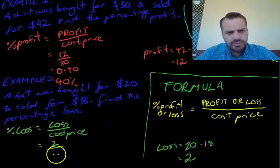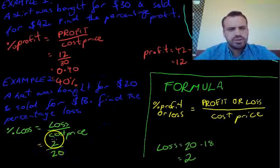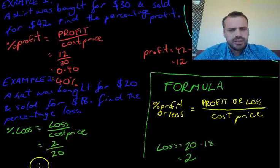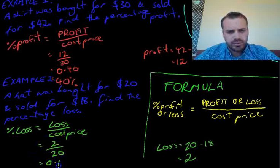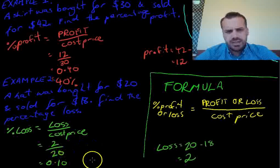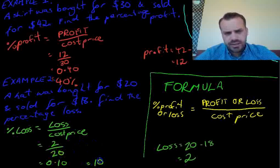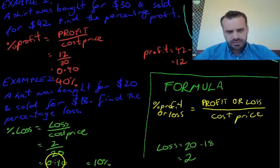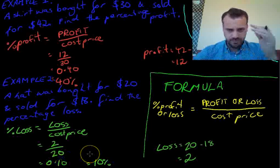So, $2 over $20. When you type that into your calculator, you're going to get 0.1. Remember, we're dealing with percentages. So, 0.1 as a percentage is 10%. Just move that decimal place two places to get the percentage.